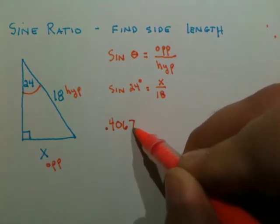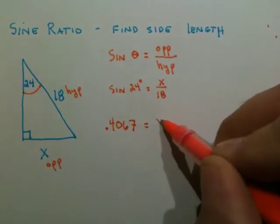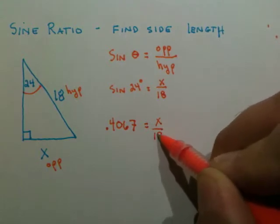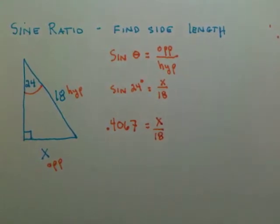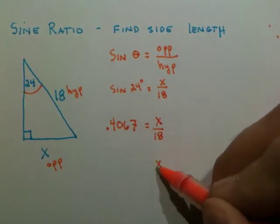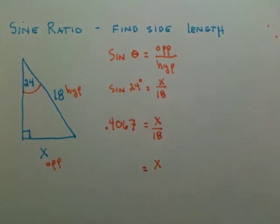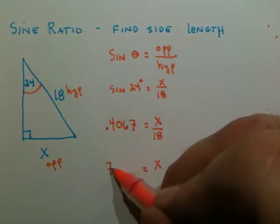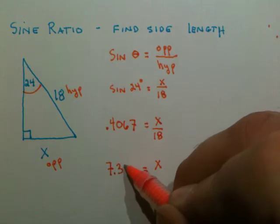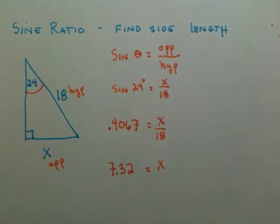To solve for X, I'm going to multiply both sides by 18, and that gives me 7.3212. Rounding to the hundredths place, we get 7.32.